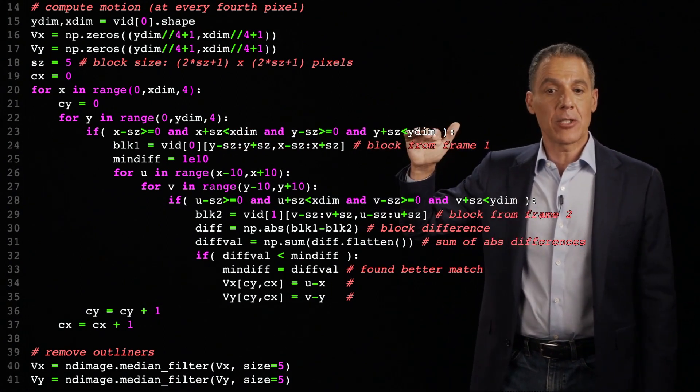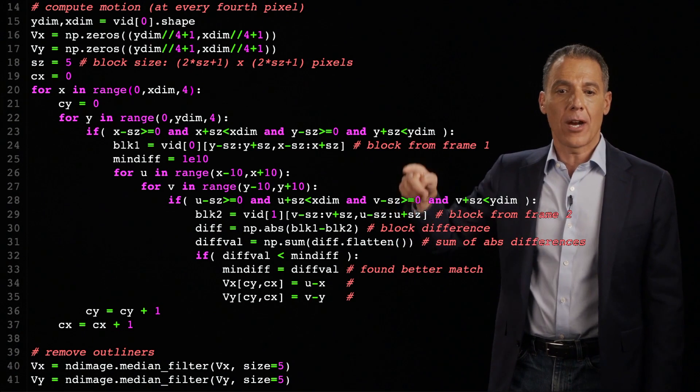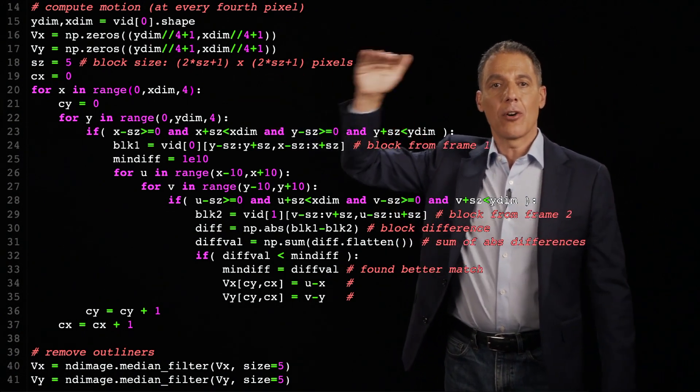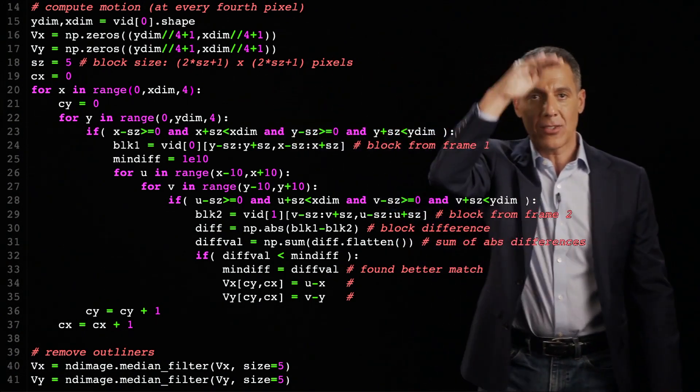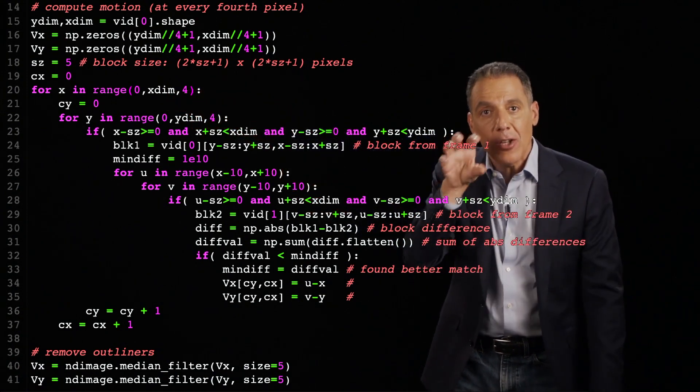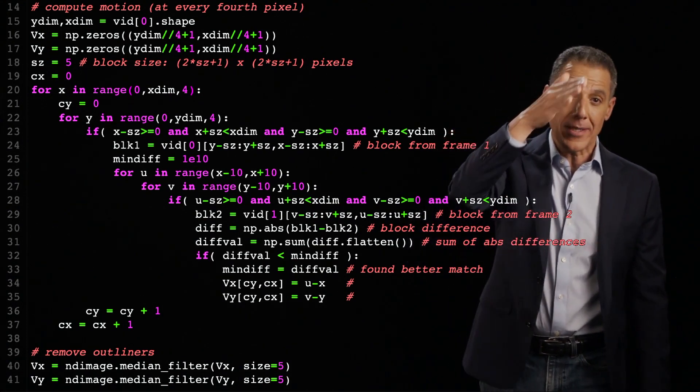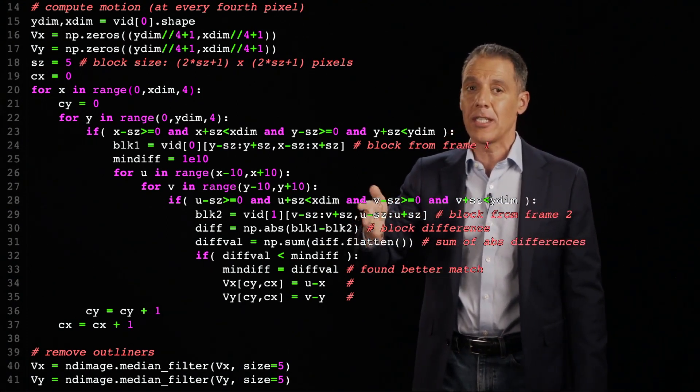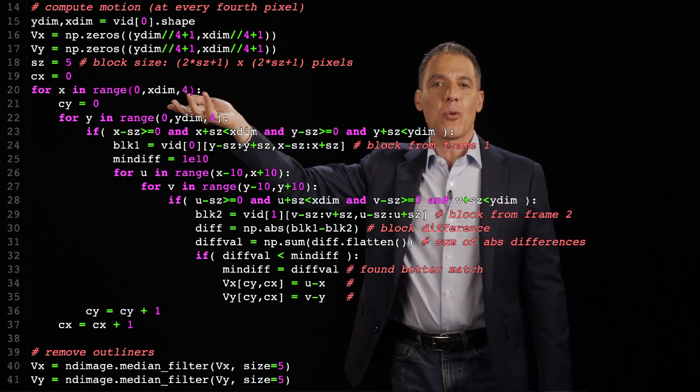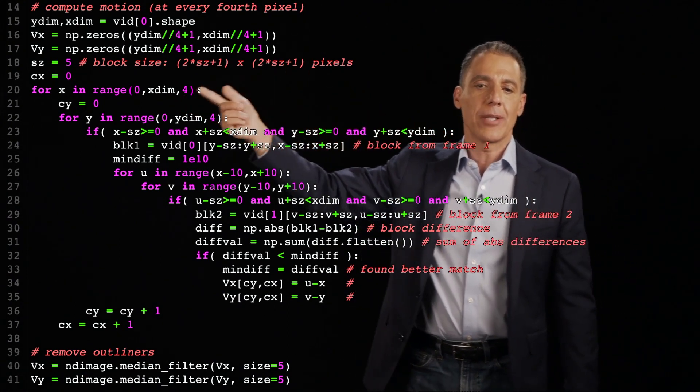Feature tracking can be very expensive because notice here I have four nested loops. What are they? The top two loops are going across the image X to Y in steps of four. And then here is the search in a little patch around where every pixel is centered. So I've got four nested loops, very costly. And so I'm going to subsample by four the same way I did with the motion estimation, every other pixel. Here I'm doing every fourth pixel.